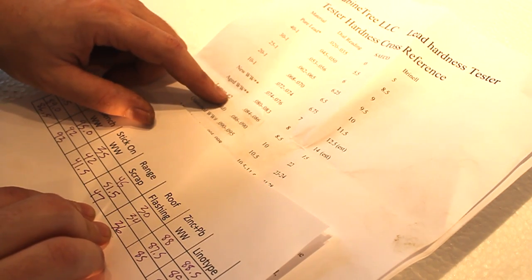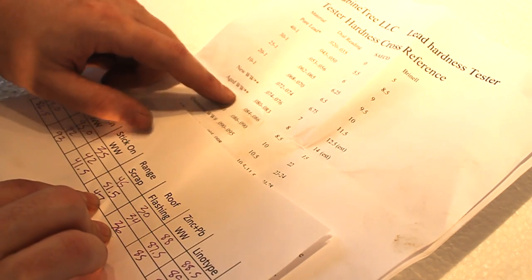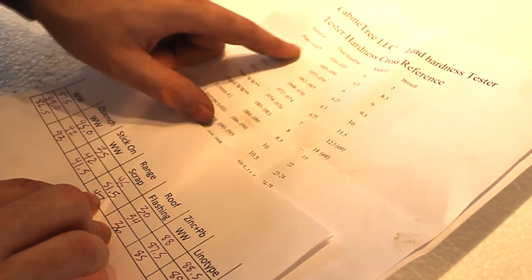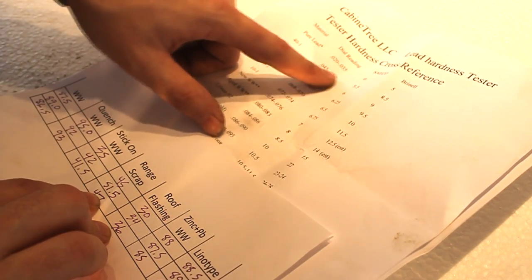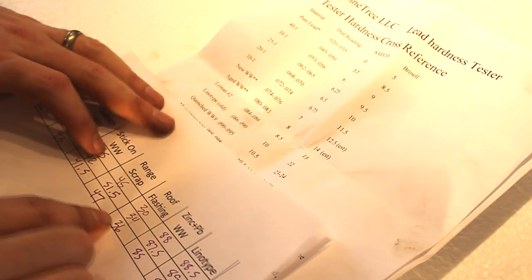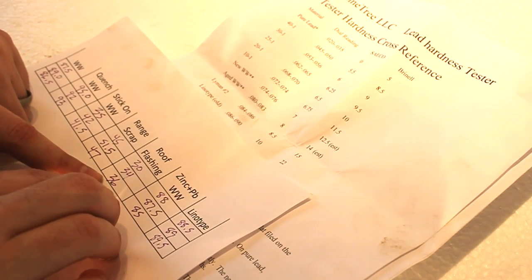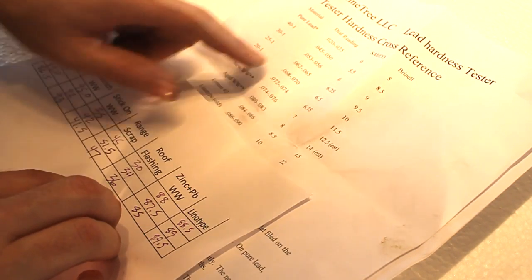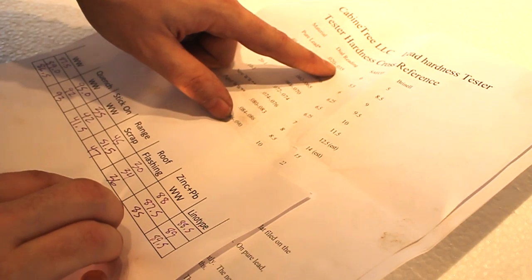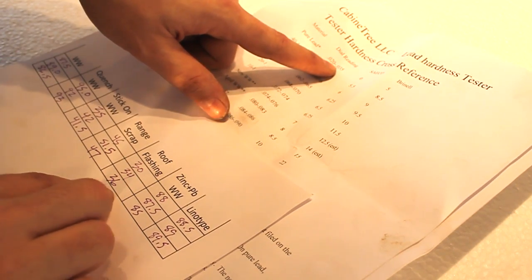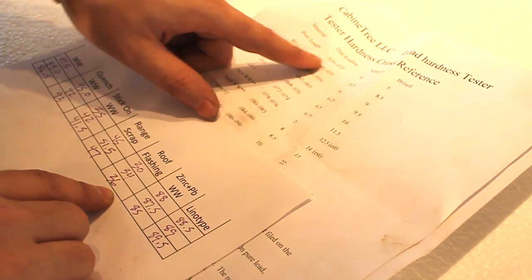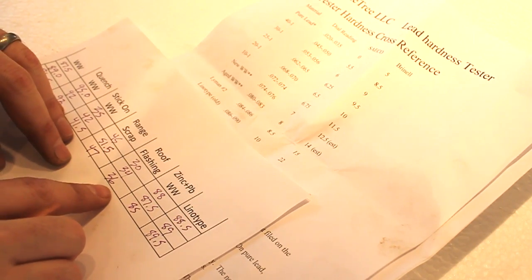Rain scrap seems to be in the high 40s, so again we're somewhere slightly above pure lead. That seems to be expected. Roof flashing is in the mid 30s, which would also be expected to be in the very soft category, so that seems reasonable.